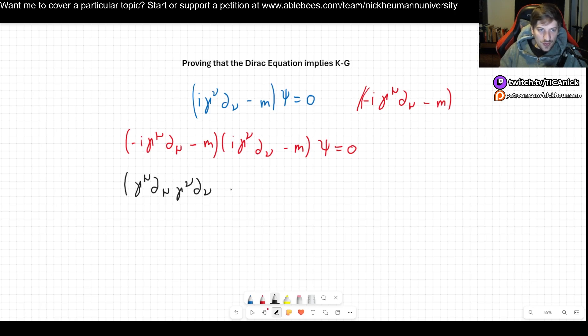So gamma mu del mu and then gamma nu del nu. Then we multiply by the next one, so then we have minus. I'm going to leave the m to the end. I could put it in the beginning because I know that m is a scalar, it can just commute, there's no problem with it, but just in case I want to be very consistent so I'm going to leave it for the end and later move it around.